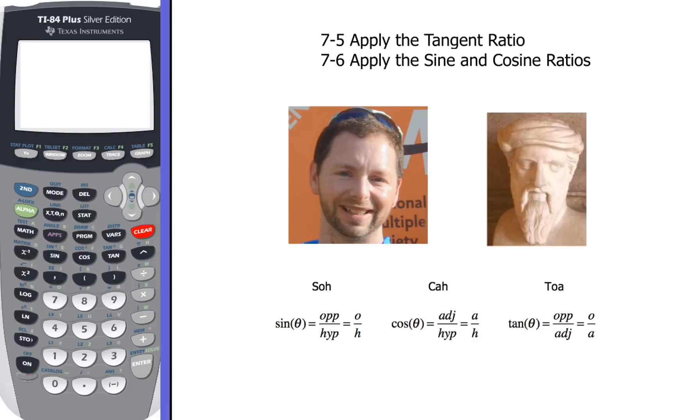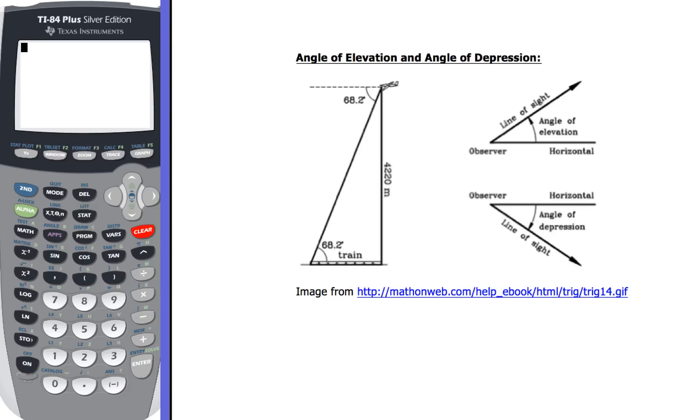Now we're going to take a look at one of the very key things that we're going to deal with here with word problems. We're going to deal with two new words: angle of elevation and angle of depression. The angle of elevation is going to, in both of these, depend on where the observer is. The angle of elevation is always down in the bottom part of something because you're going to be looking up to some sort of object.